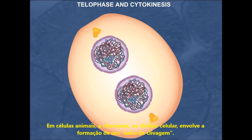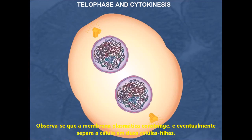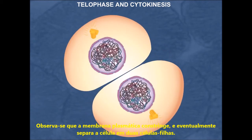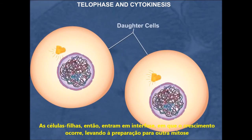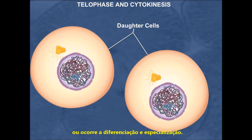In animal cells, cytokinesis or cell division involves the formation of a cleavage furrow. The plasma membrane is observed to constrict and eventually separates the cell into two daughter cells. The daughter cells then enter interphase where growth and enlargement occurs, leading to either preparation for another mitosis or differentiation and specialization.